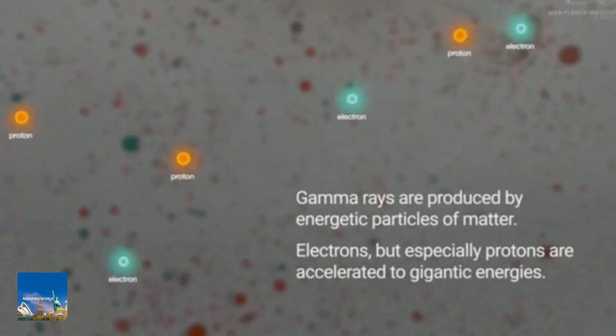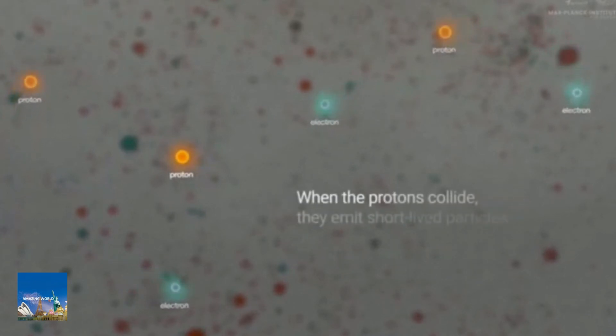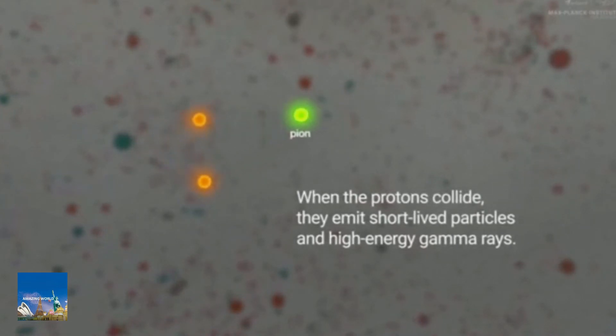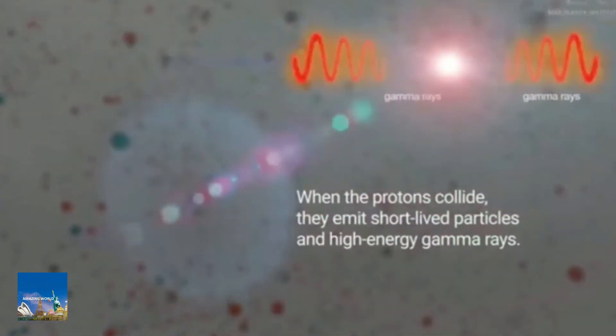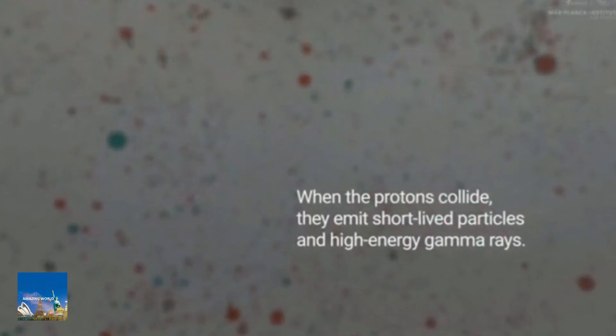The spectacular eruption of R.S. Ophiuchi shows that the MAGIC telescopes' fast response really pays off, the team explained. It takes them no more than 30 seconds to move to a new target, said David Green, a scientist at the Max Planck Institute for Physics and one of the authors of the papers.